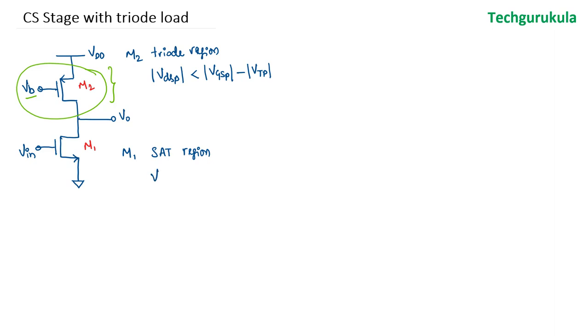In that case, VDSN is nothing but V0. V0 should be greater than VIN minus VTN. So overall we can say that the output voltage should be greater than VIN minus VTN and it should be less than VDD minus the voltage drop across M2. So it will be VDD minus magnitude of VDSP.